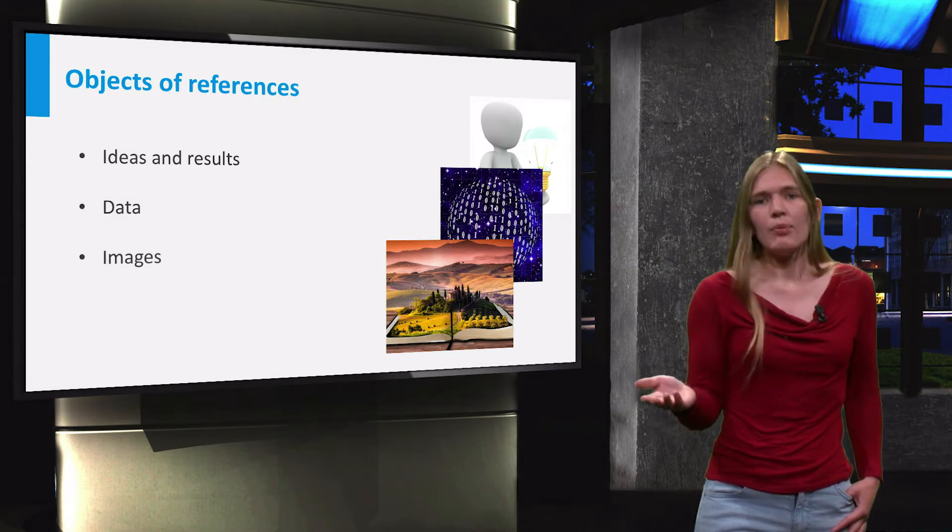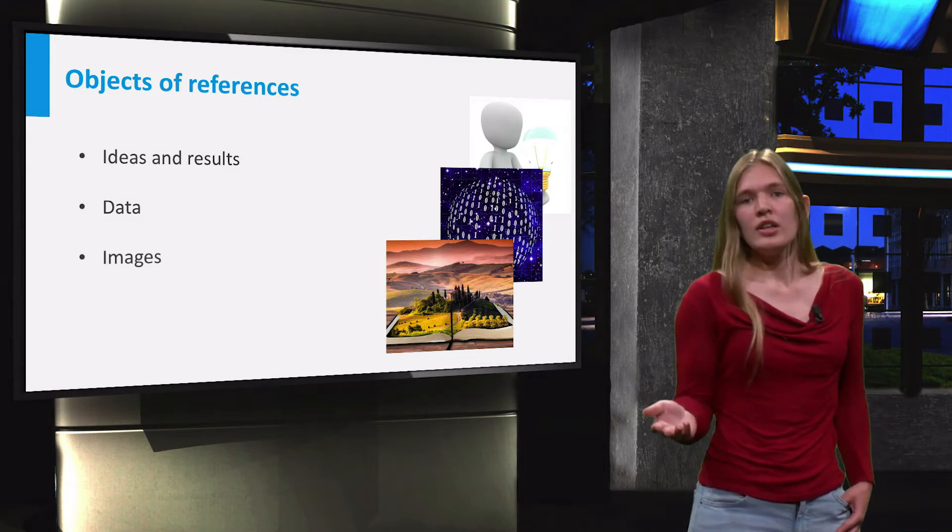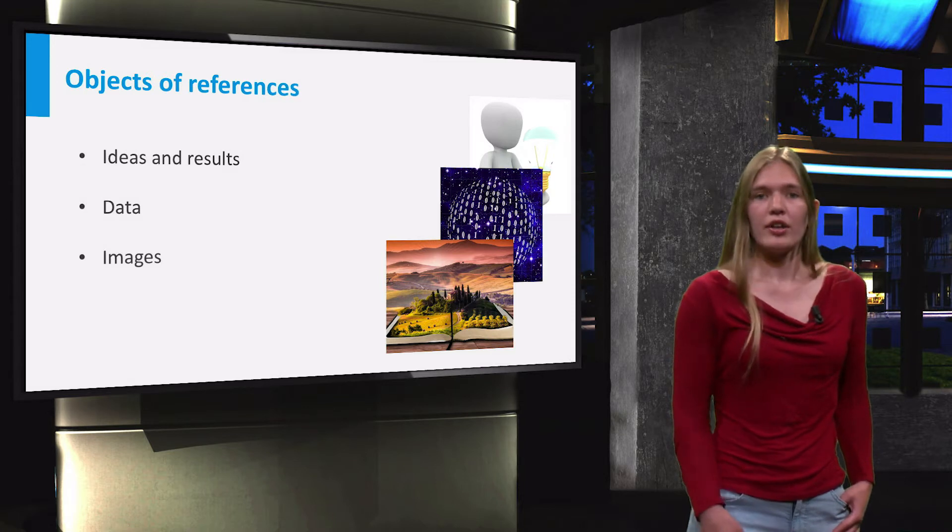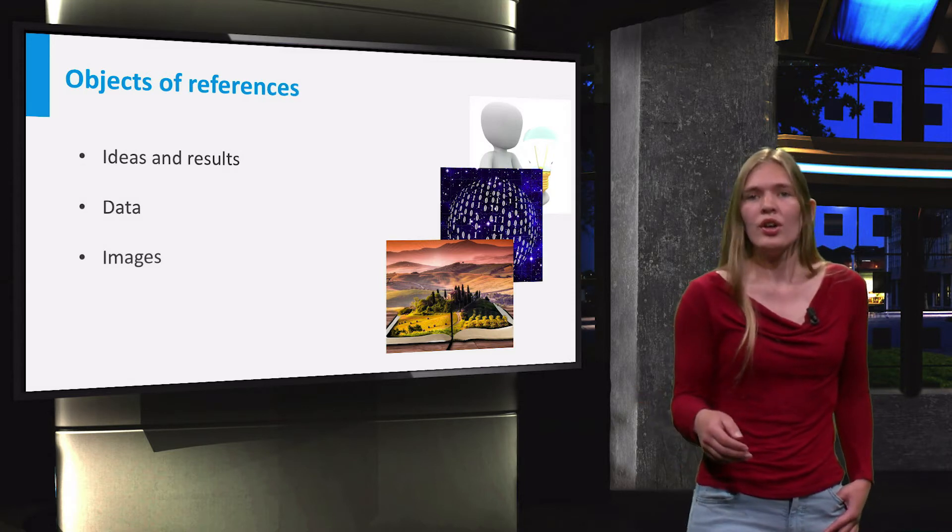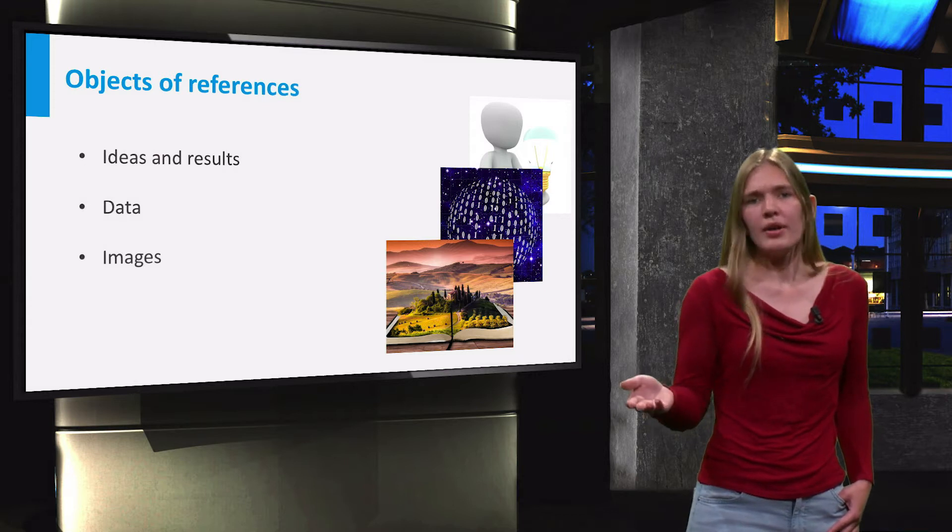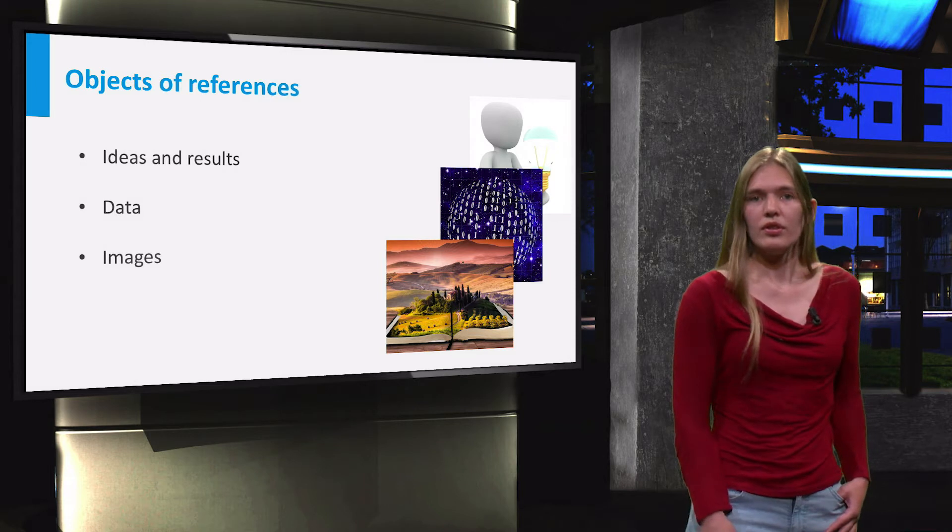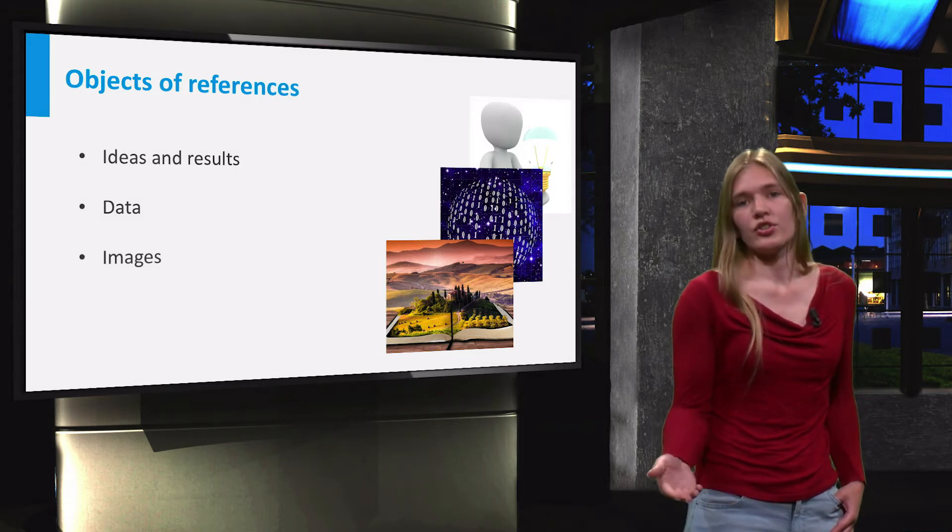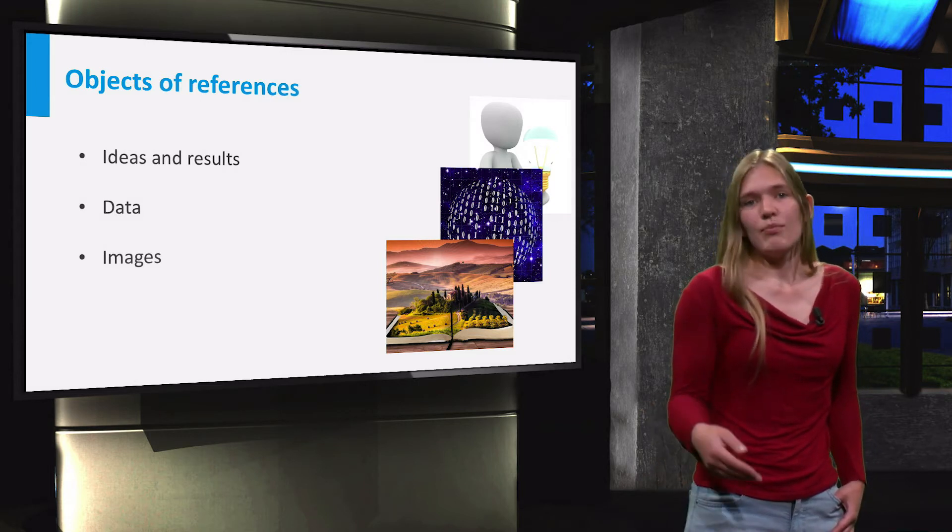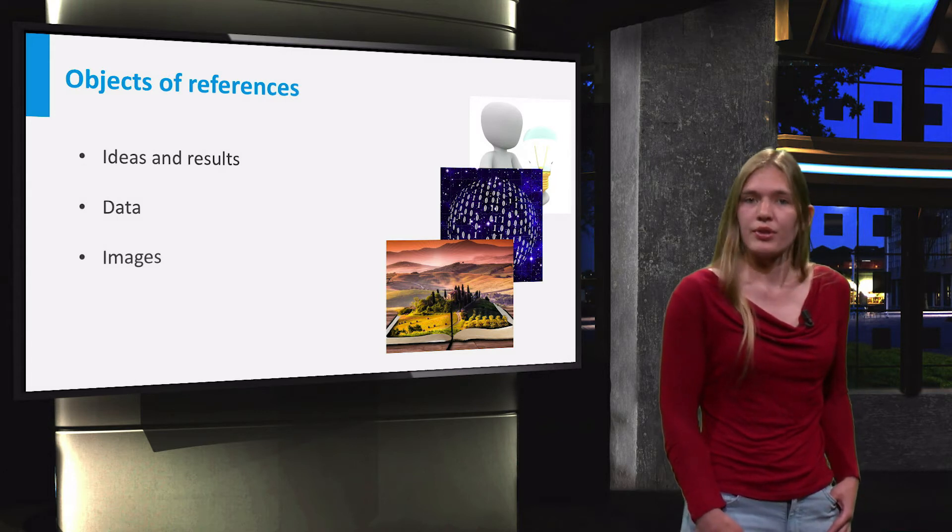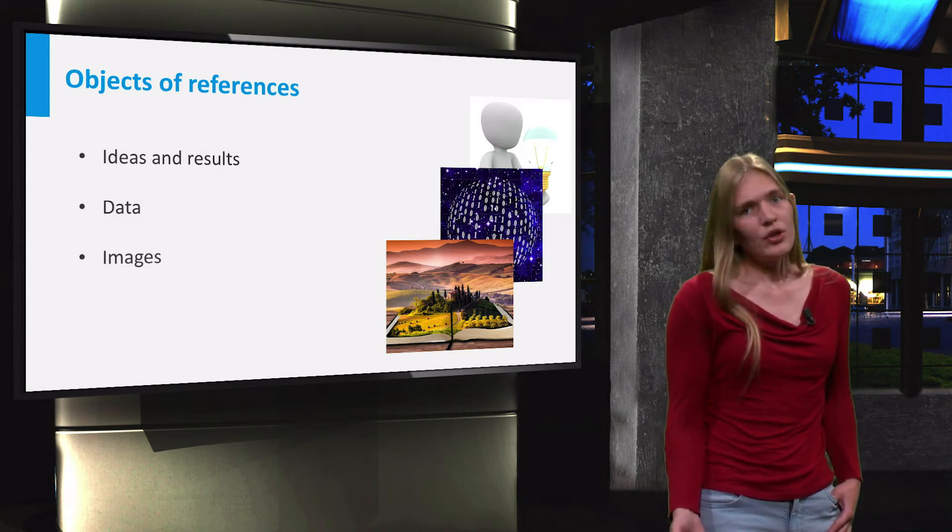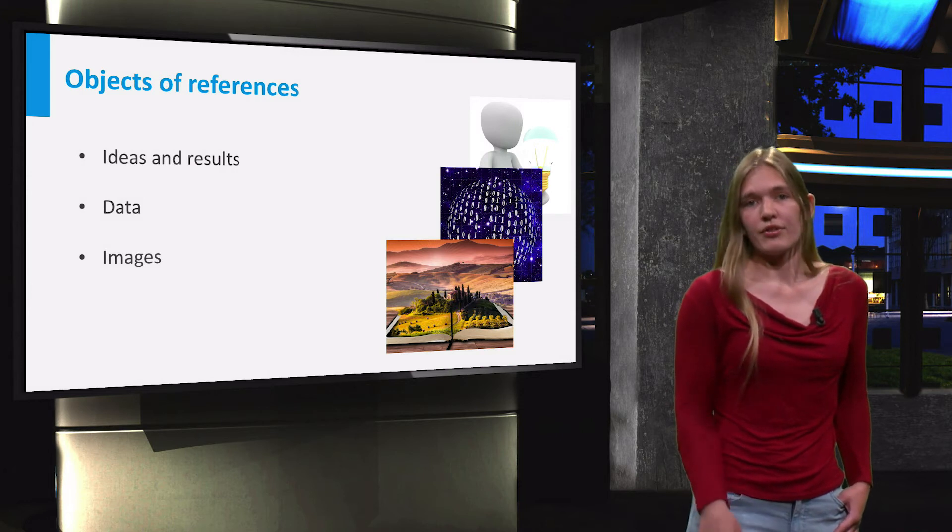Whenever you are in doubt, it is best to give a reference. However, some information may be regarded as common knowledge. How to solve the differential equation y equals 4y prime is one example of common knowledge among mathematicians. Euler's method is another such example, and its name will automatically give credit to its inventor. In general, if you learned it in this course, you do not need to give a reference.